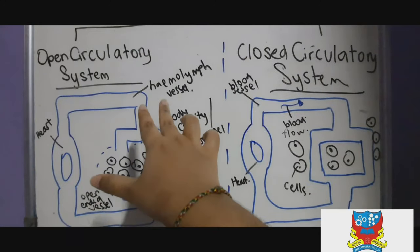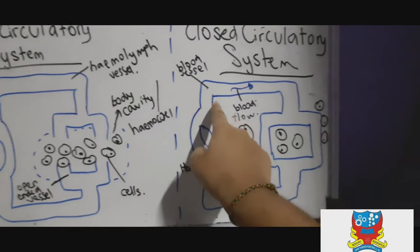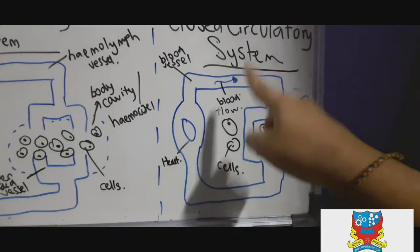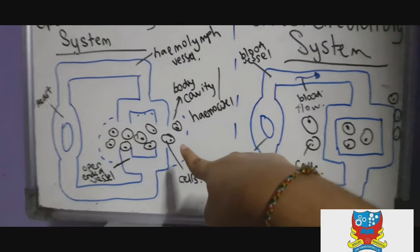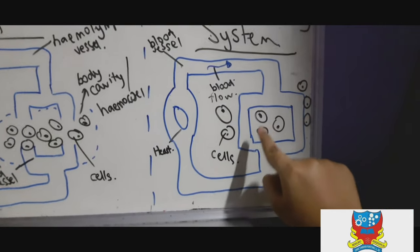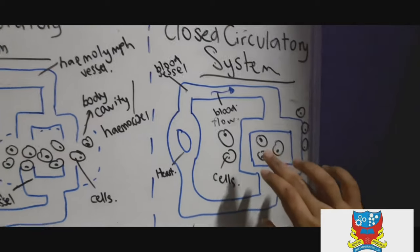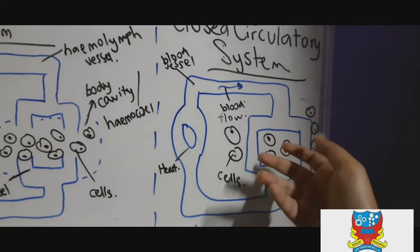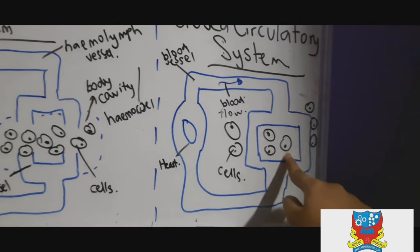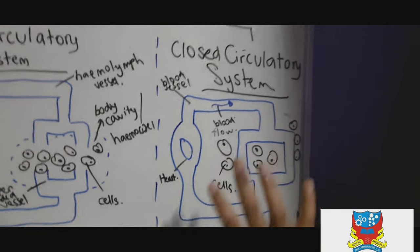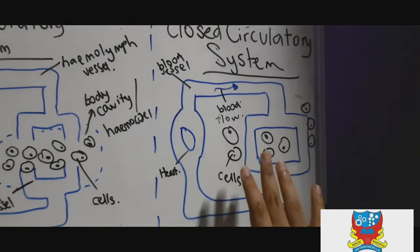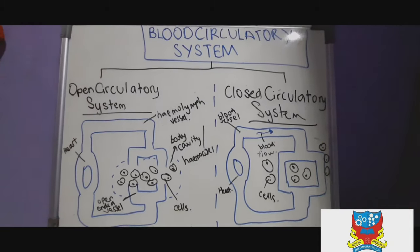In the closed circulatory system, blood flows through enclosed blood vessels — not haemolymph. The blood is contained within closed vessels, and oxygenated blood containing oxygen and nutrients diffuses out of the capillaries into the body cells. There are cells inside and outside the vessels exchanging substances, similar to what was learned in Form 3.